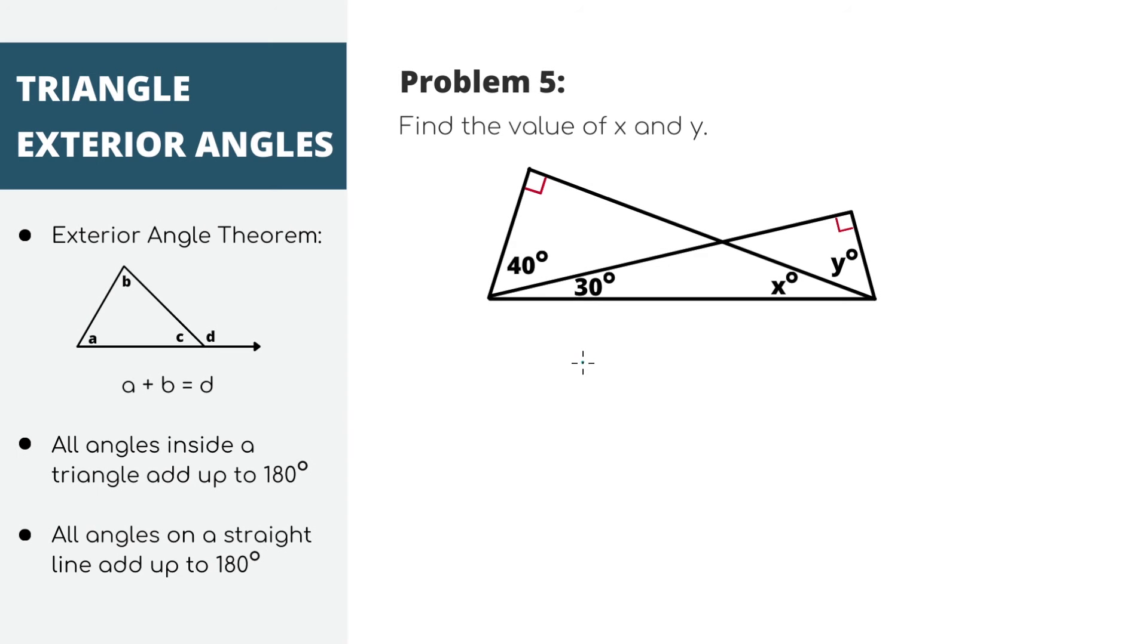Problem 5, the last one. I'll show you two ways to do this. First using the exterior angle theorem, and then after I'll show you how I would do it. Using the exterior angle theorem first, you can see that there's a triangle with a tail here, so classic exterior angle theorem question. In order to find this angle, you can add these interior angles 40 plus 90 to get that it equals 130.